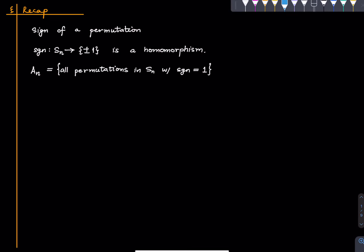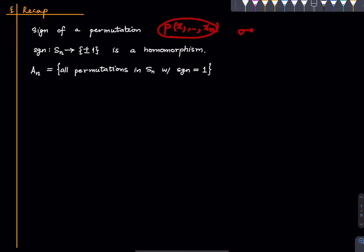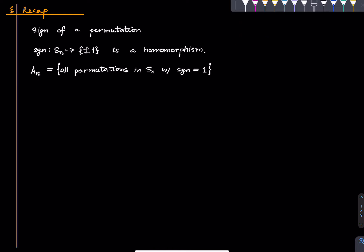Welcome to this lecture series in group theory. In this lecture we will be talking about transpositions. Let us recall a few things we need. We have discussed what is called the sign of a permutation, via a certain polynomial argument. We defined these multivariable polynomials, and given such a polynomial and a permutation of the first n integers, we get another polynomial of this sort, and we saw that this is either plus or minus times the original one. Whatever sign we get is the sign of the permutation sigma.